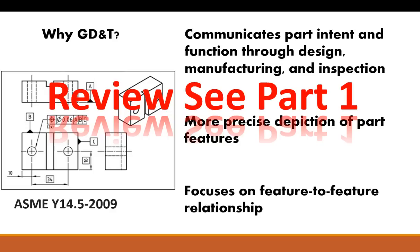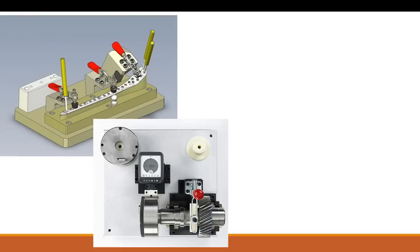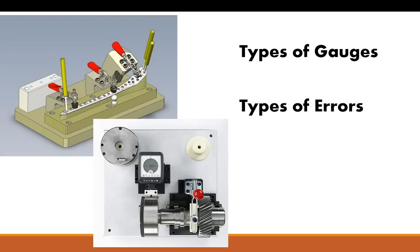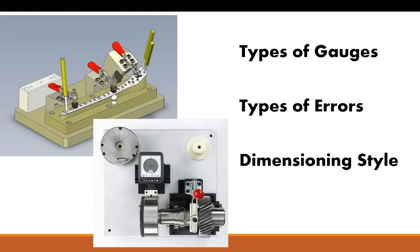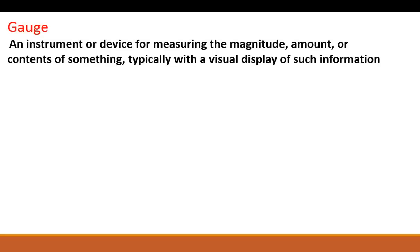So what we're going to look at this time is different types of gauges, the different types of errors that can come with these gauges, as well as different types of dimensioning styles. I'm going to go over how these things all tie back to GD&T — how a blueprint is written, how inspection is done, and how this can help you make a higher quality part.